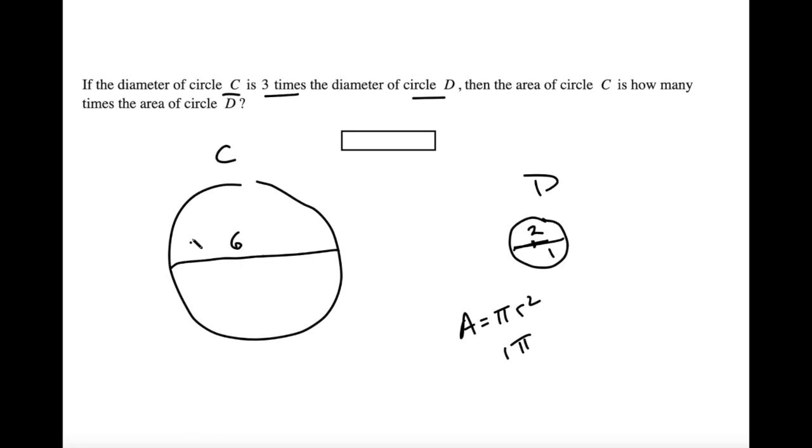And the area for circle C is pi r squared. In this case, the radius is three or half of the diameter. Area equals pi r squared, or pi times three squared, or nine pi. So it's easy to see that the area of circle C is nine times larger than the area of circle D. And that's our answer.